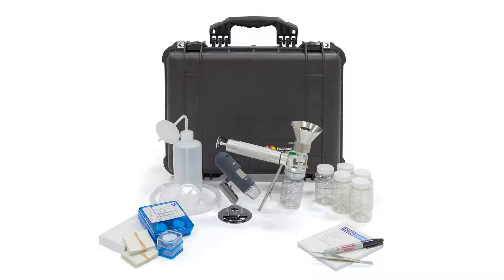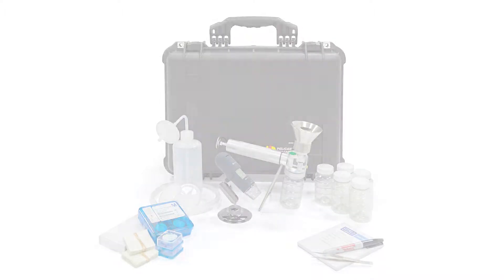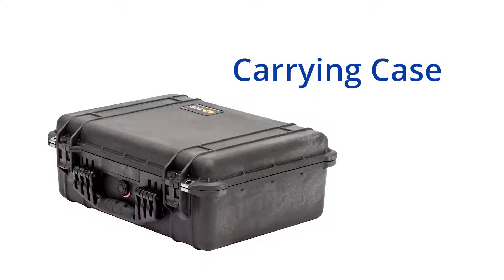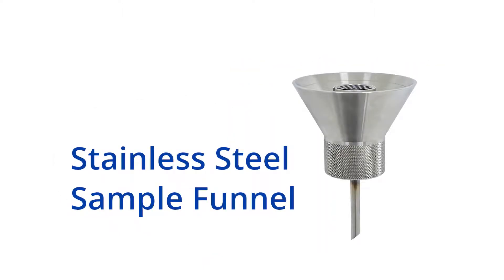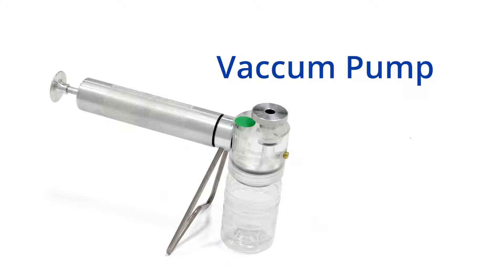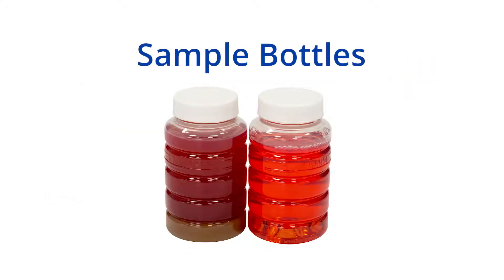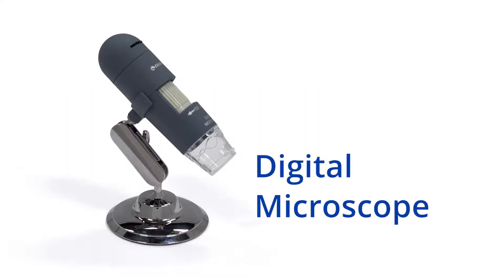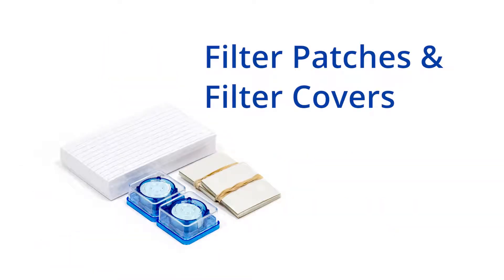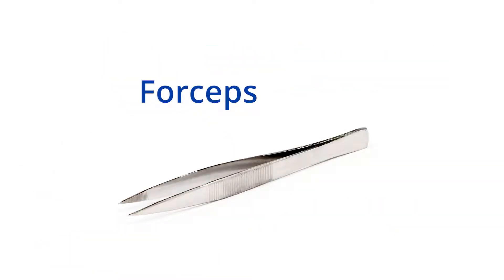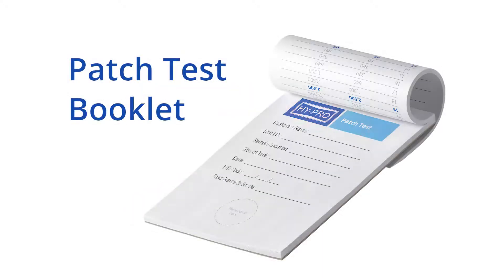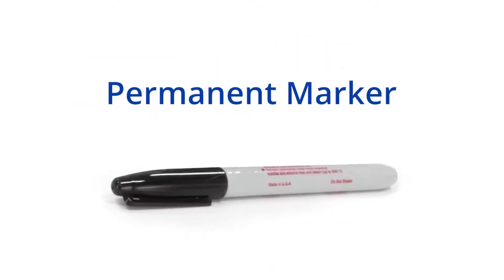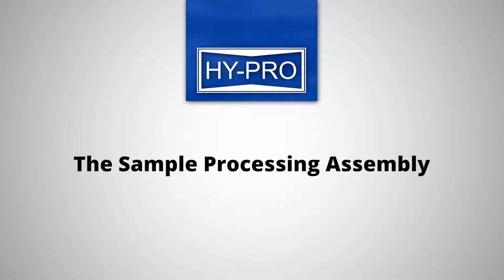Identifying the equipment inside the PTK-1: the carrying case, the stainless steel sample funnel, the vacuum pump, the sample bottles, the solvent dispenser and filters, the digital microscope, the filter patches and filter patch covers, the filter patch forceps, the patch test booklet, the permanent marker, and the sample processing assembly.